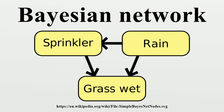Edges represent conditional dependencies. Nodes that are not connected represent variables that are conditionally independent of each other. Each node is associated with a probability function that takes, as input, a particular set of values for the node's parent variables and gives the probability of the variable represented by the node. For example, if parent nodes represent Boolean variables, then the probability function could be represented by a table of entries, one entry for each of the possible combinations of its parents being true or false.